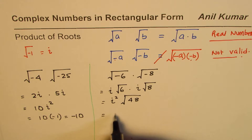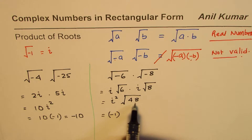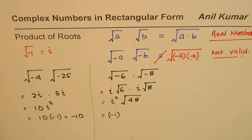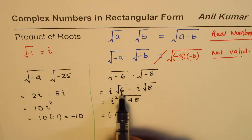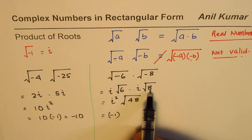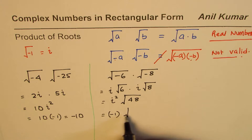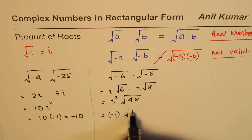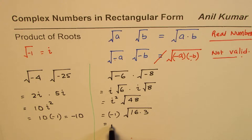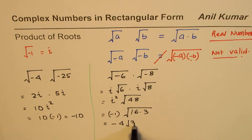Since i² equals minus 1, we have minus square root of 48. To simplify, we can write 48 as 16 times 3. So this becomes minus square root of 16 times square root of 3, which equals minus 4 square root of 3.